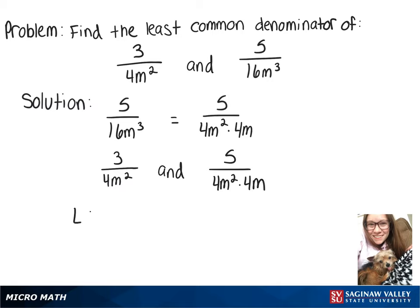Our least common denominator will be whatever factor they have in common times whatever factors they don't have in common. They both have 4m squared, and our additional factor is 4m. So when we multiply that out, we get the least common denominator of 16m cubed.